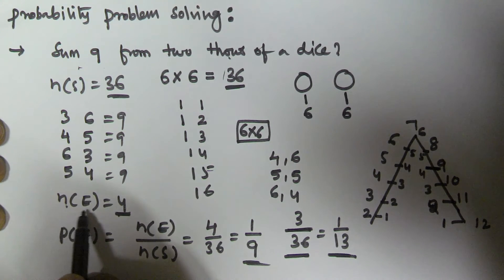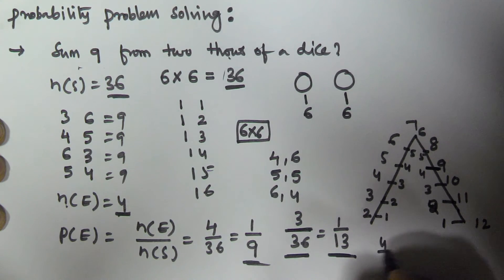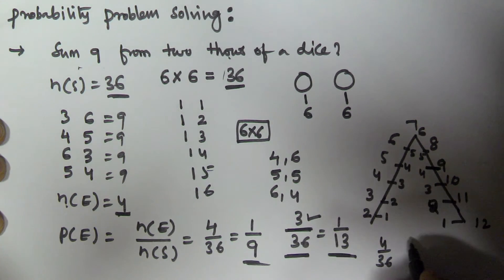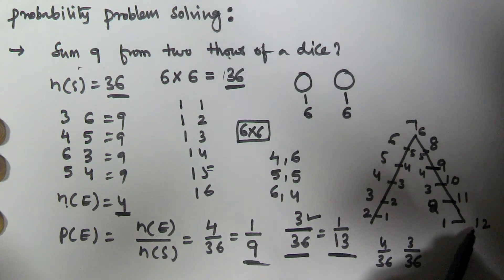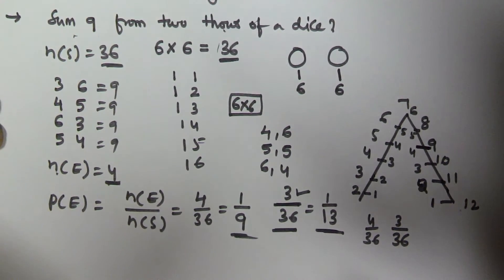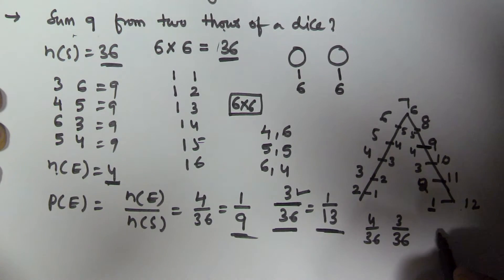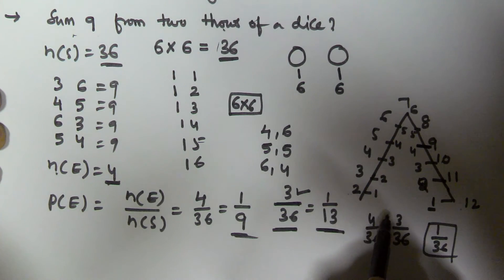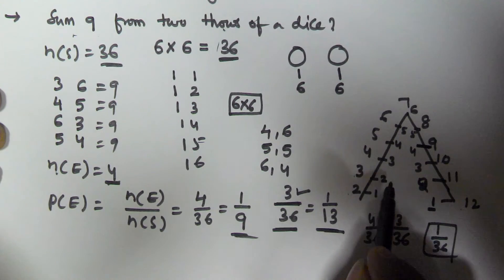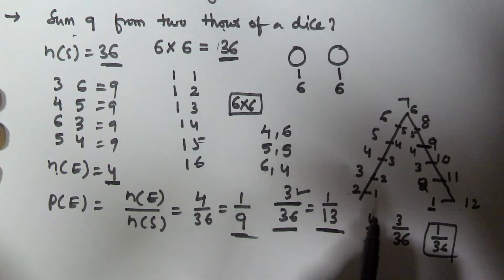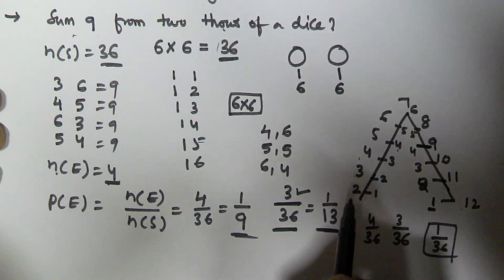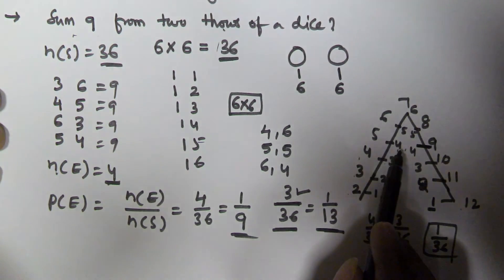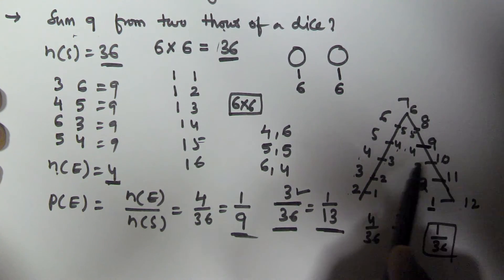Using the pyramid: sum 9 gives 4/36; sum 10 gives 3/36; sum 12 gives 1/36 — only when both dice show 6. Sum 2 comes only 1 time (1,1); sum 3 comes 2 times (1,2) and (2,1); sum 4 comes 3 times (1,3),(3,1),(2,2); sum 5 comes 4 times: (1,4),(4,1),(2,3),(3,2). Similarly, sum 6 comes 5 times and sum 7 comes 6 times, then it decreases symmetrically: 8→5, 9→4, 10→3, 11→2, 12→1.